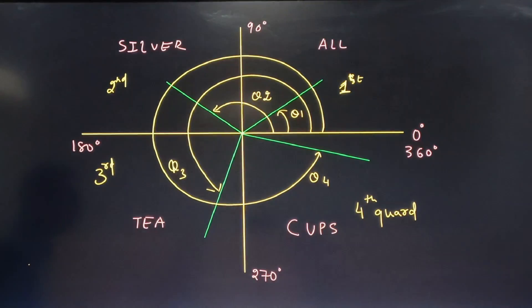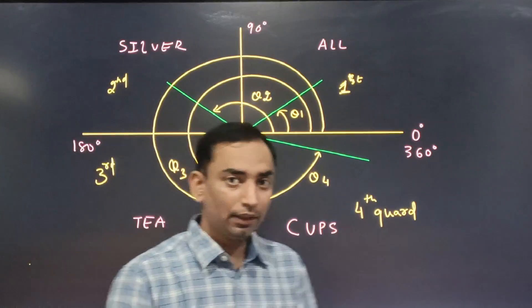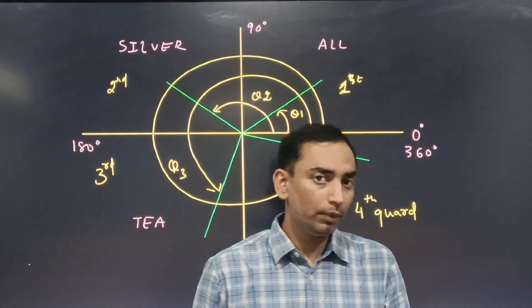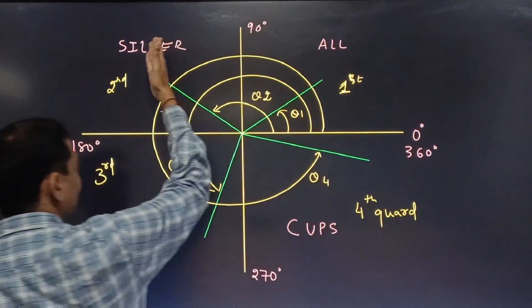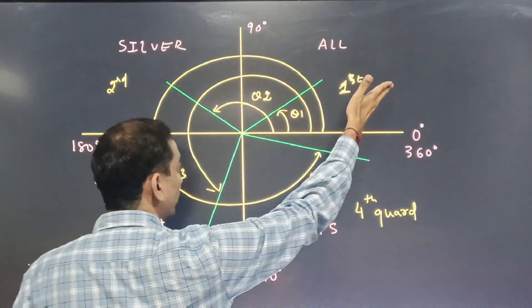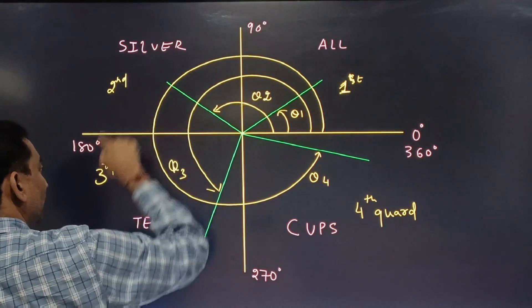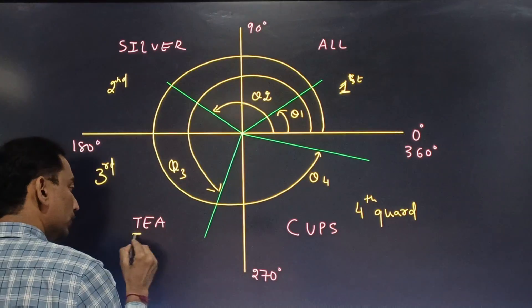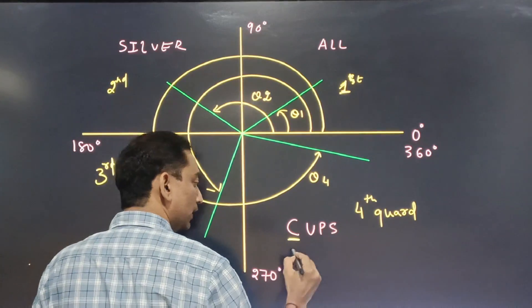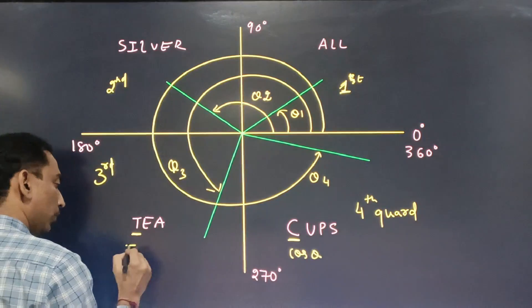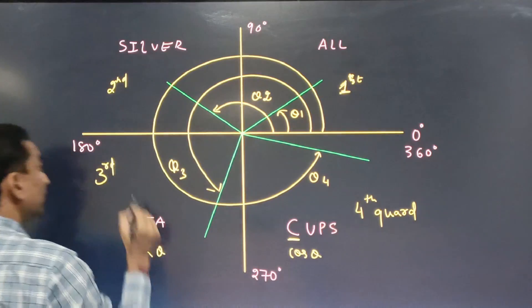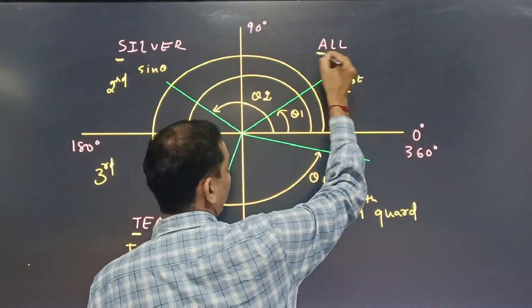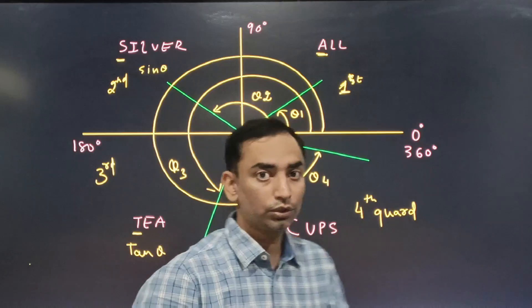To remember this, use the mnemonic: 'Add Sugar To Coffee' or 'All Silver Tea Cups.' Write 'All' in the first quadrant, 'Silver' in the second, 'Tea' in the third, and 'Cups' in the fourth. The first initials stand for: All (all trig functions positive), Silver → sin θ positive, Tea → tan θ positive, and Cups → cos θ positive.